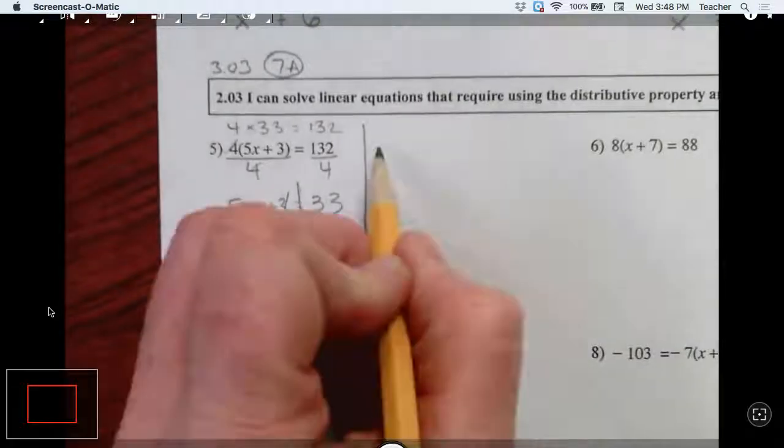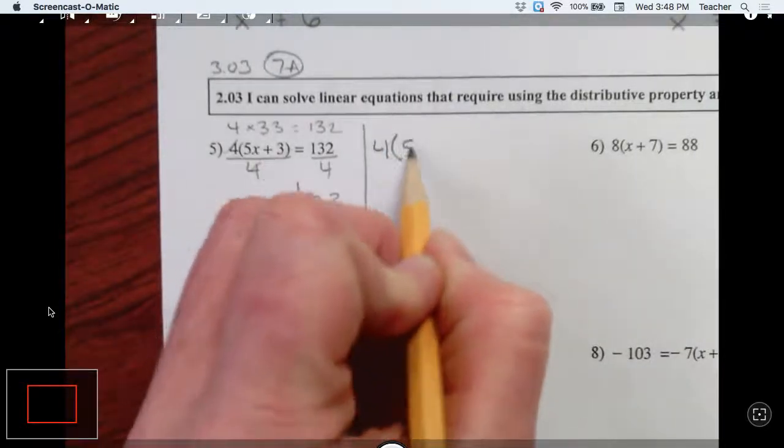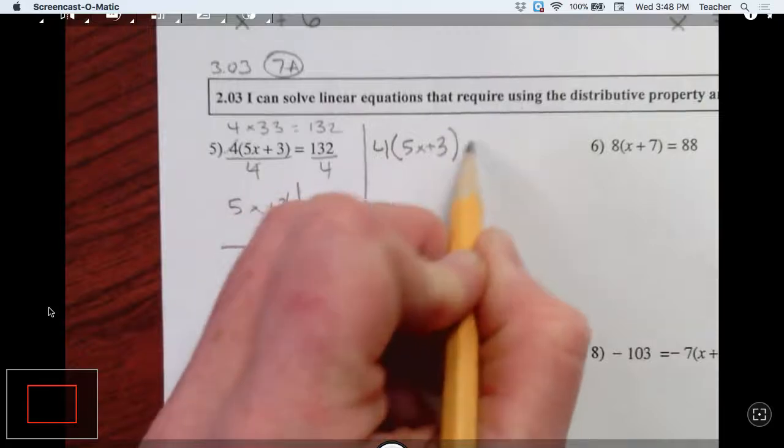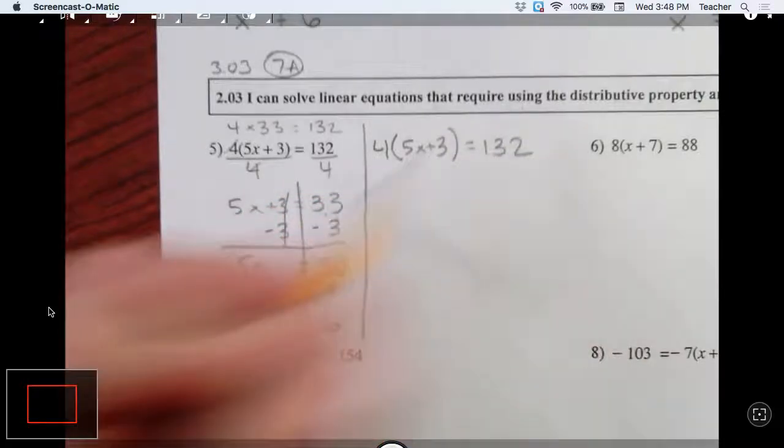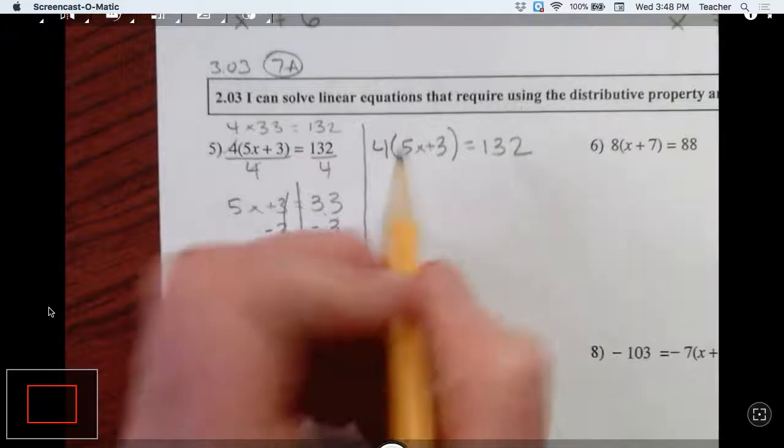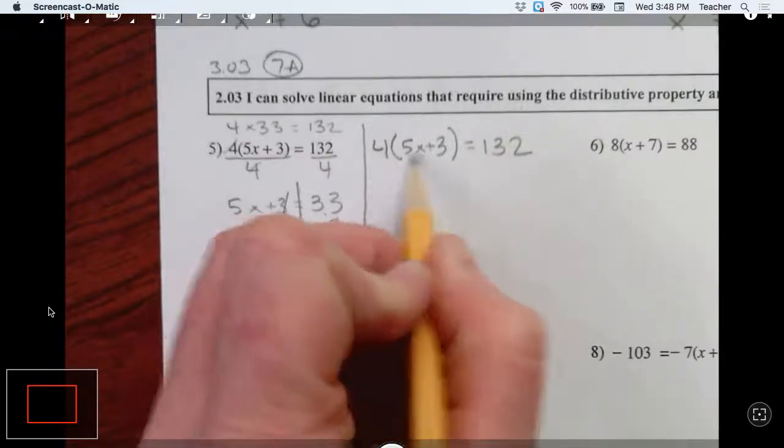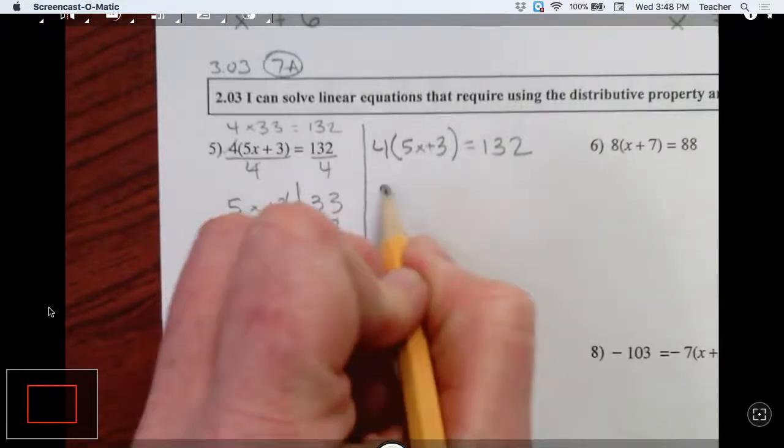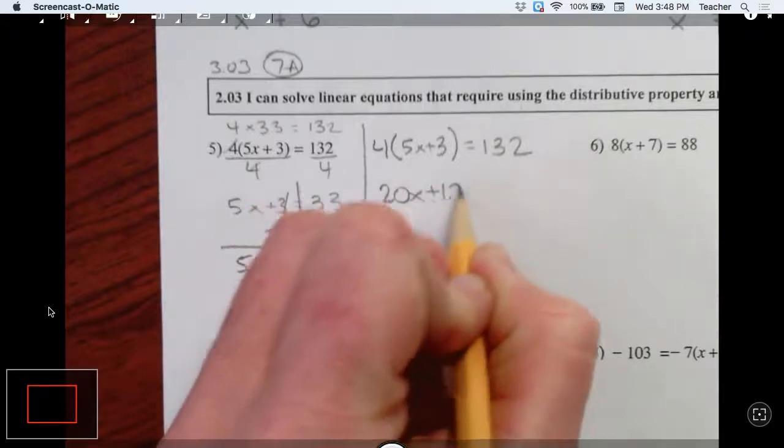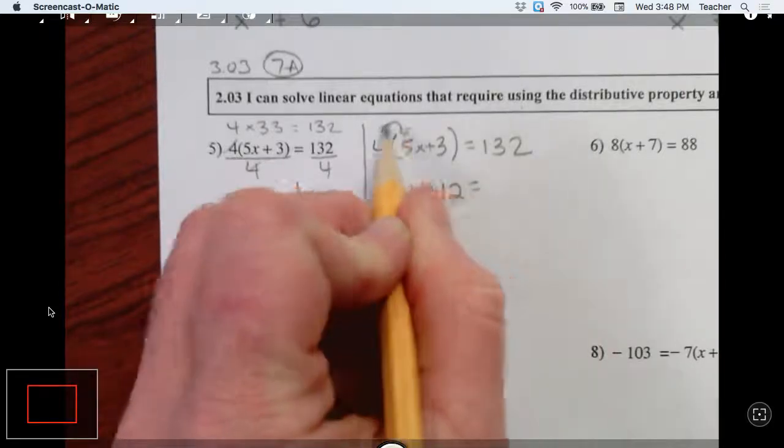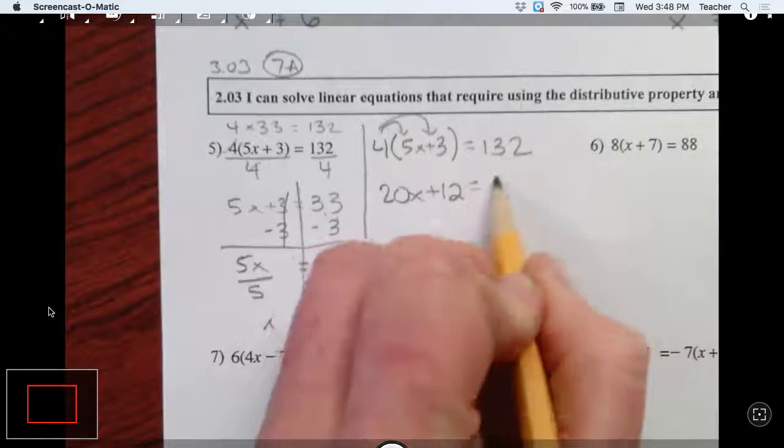The other way I'm going to rewrite this problem is go ahead and simplify this left side. So I have four groups of 5x plus 3. So that means I have 20x plus 12. I distributed.